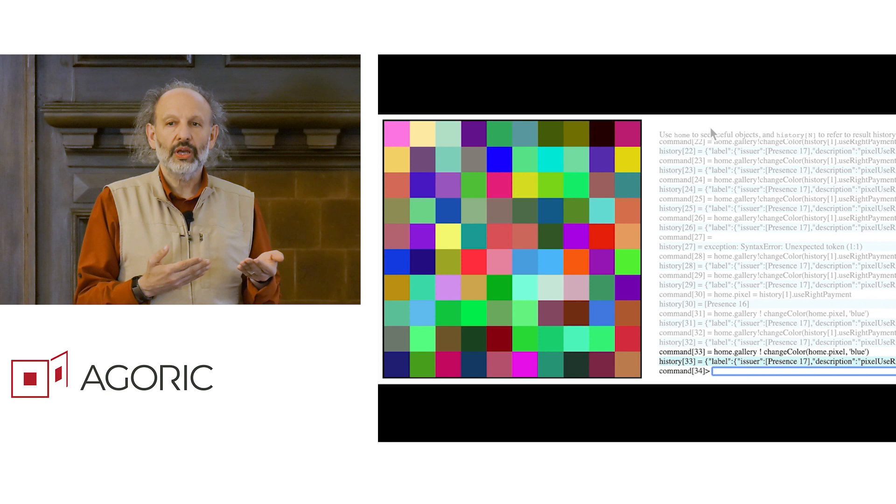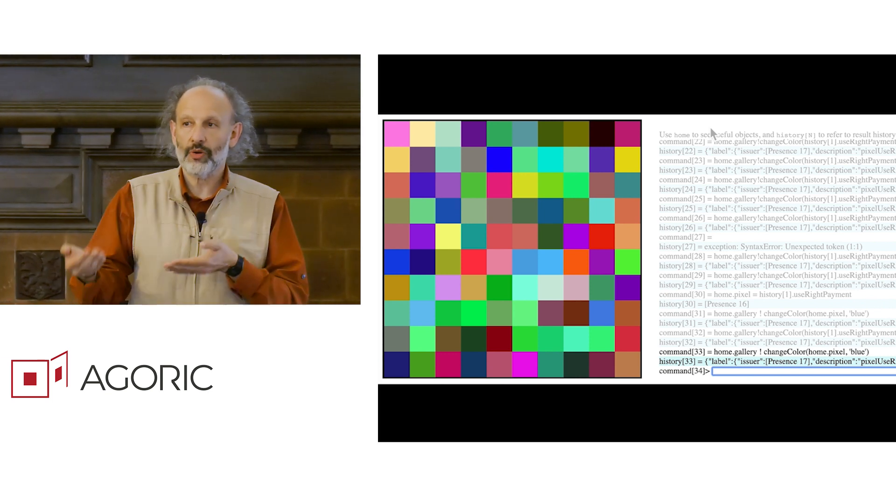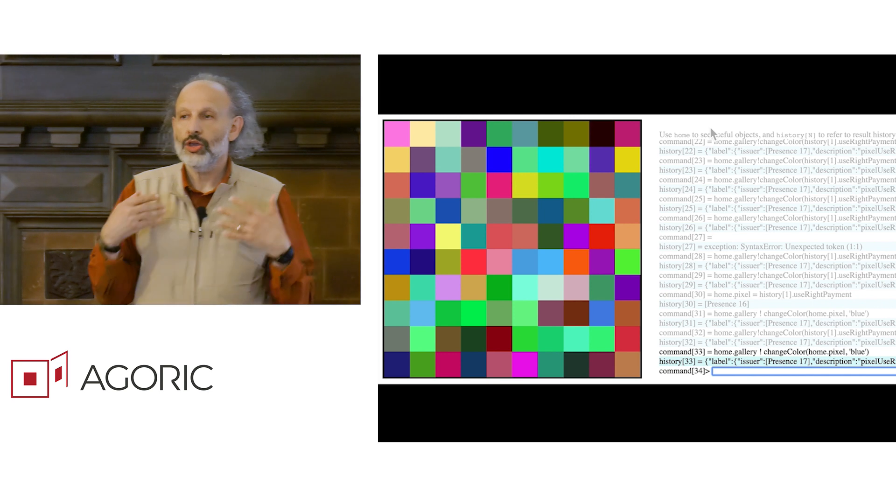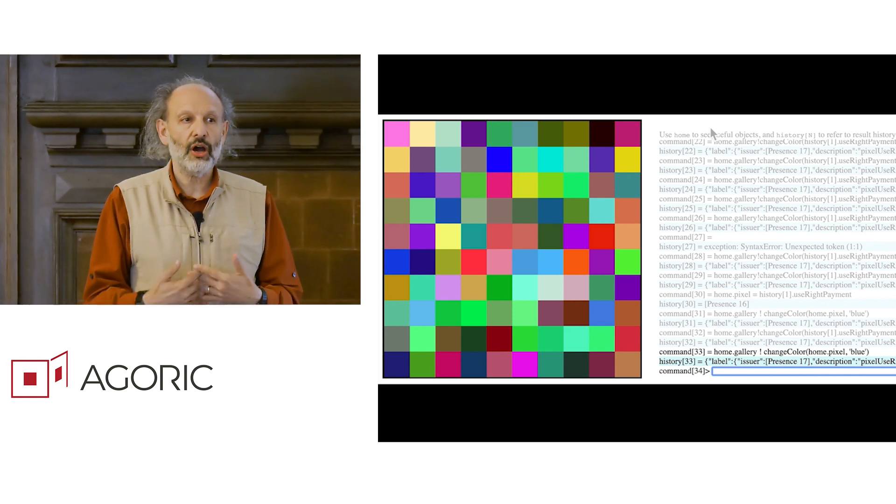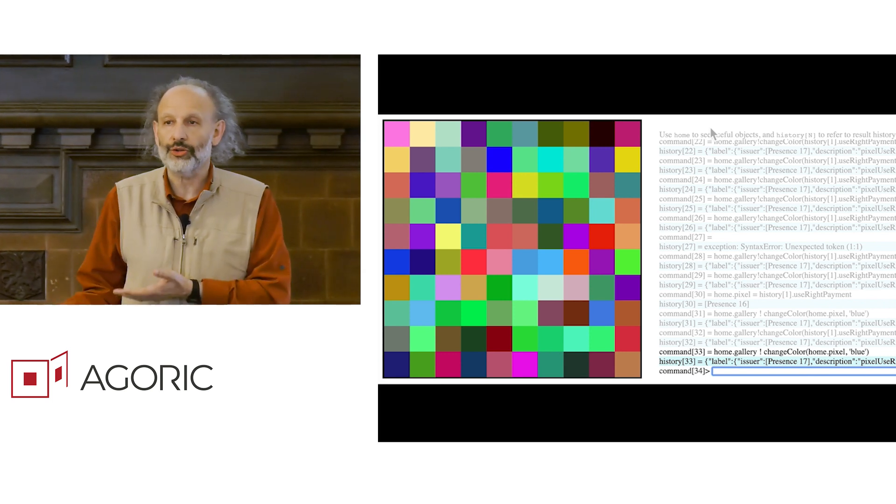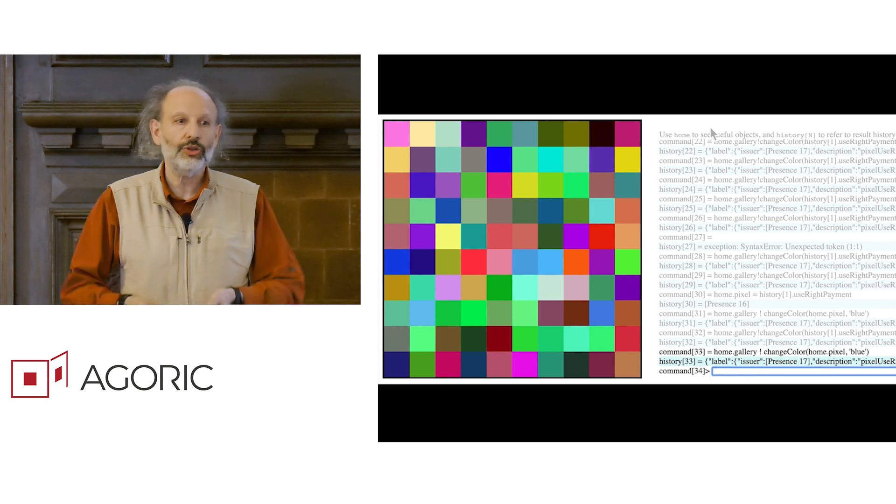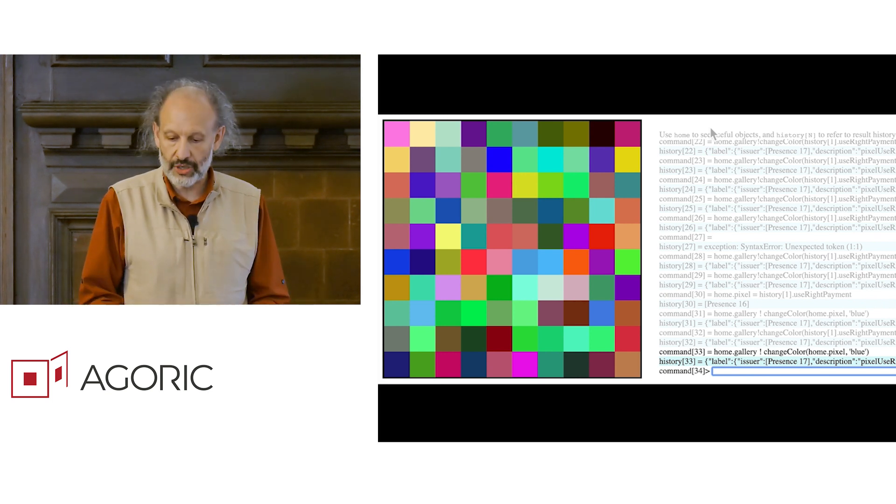So not only can you buy and sell pixels and negotiate for pixels, create a market in pixels, you can create auction institutions of various kinds for trading these rights. You can create derivative instruments, covered calls, futures, etc. And if you can do that for rights to color a pixel, you can do it for multi-million dollar financial instruments.